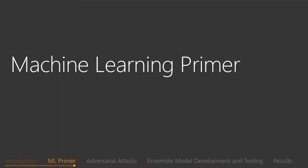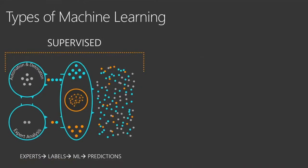Let me go through a quick machine learning primer. At a very high level, there are two primary kinds of machine learning we use. The first one is supervised machine learning, where malware experts and researchers create labels for entities — files, processes, behaviors, or a combination of them. You use these labels to identify what is good and what is bad, create a training dataset, feed it to a machine learning algorithm, and then use the resulting model to predict unknown future datasets.